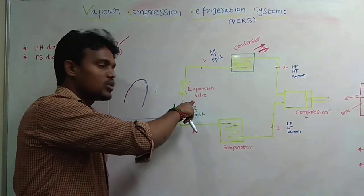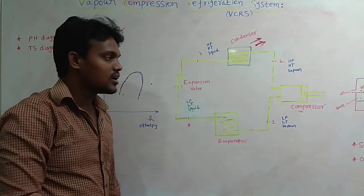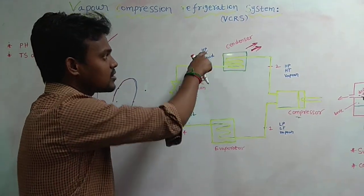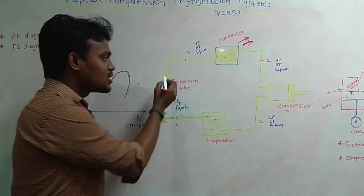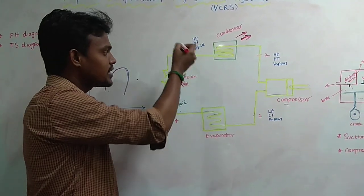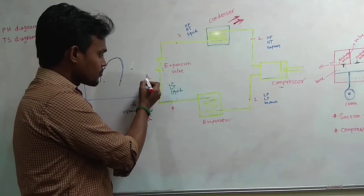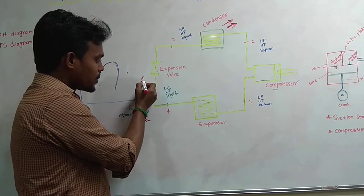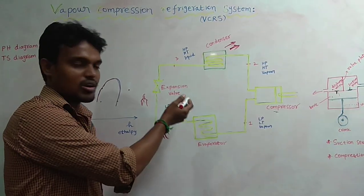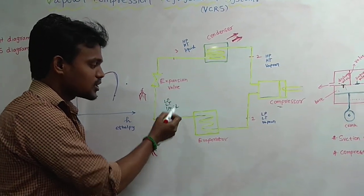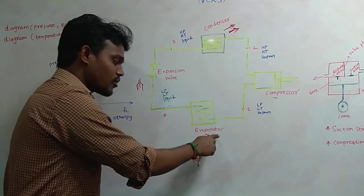The condenser output — high pressure, high temperature liquid — enters the expansion valve. The expansion valve causes a pressure drop: high pressure, high temperature liquid becomes low pressure, low temperature liquid. The liquid expands through the hole in the expansion valve, causing a phase change. The output is low pressure, low temperature liquid.